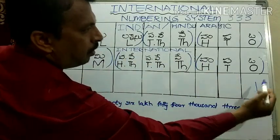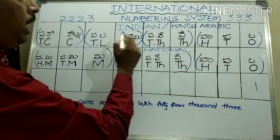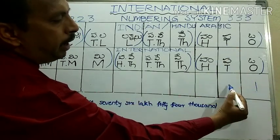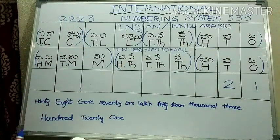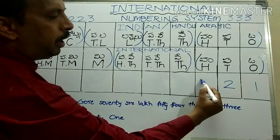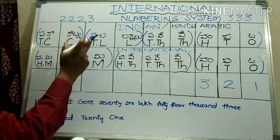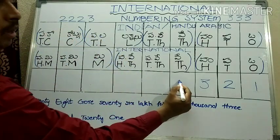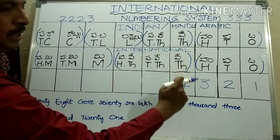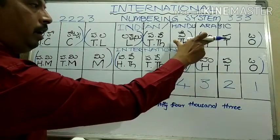Now let's discuss some numbers. The number 1 is the same in both the Indian system and the international system. Similarly, 21 is the same in both systems. 321 is also the same in both the Indian and international systems. Next, 4,321 — thousands and ten thousands are in the same place in both systems, so 4,321 is written the same in both.